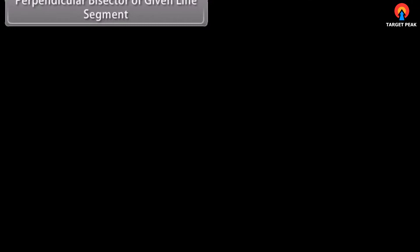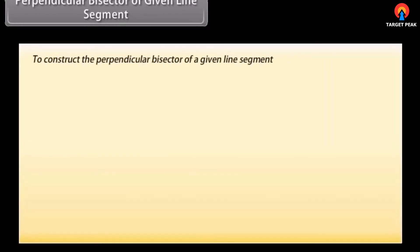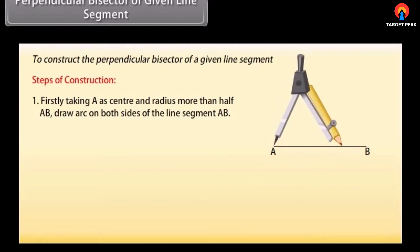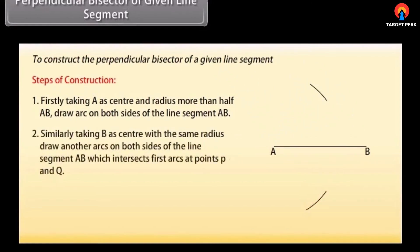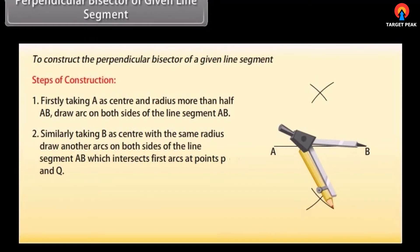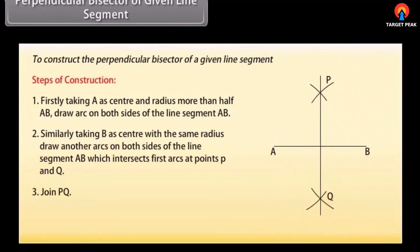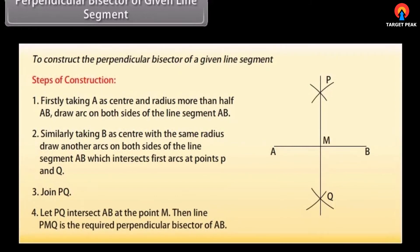Perpendicular bisector of a given line segment. Now we will learn to construct the perpendicular bisector of a given line segment. Let us take a line segment AB. Taking A as centre and radius more than half AB, draw arcs on both sides of AB. Similarly, taking B as centre with the same radius, draw arcs on both sides intersecting the first arcs at points P and Q. Now join PQ. Let PQ intersect AB at point M. Then line PMQ is the required perpendicular bisector of AB.